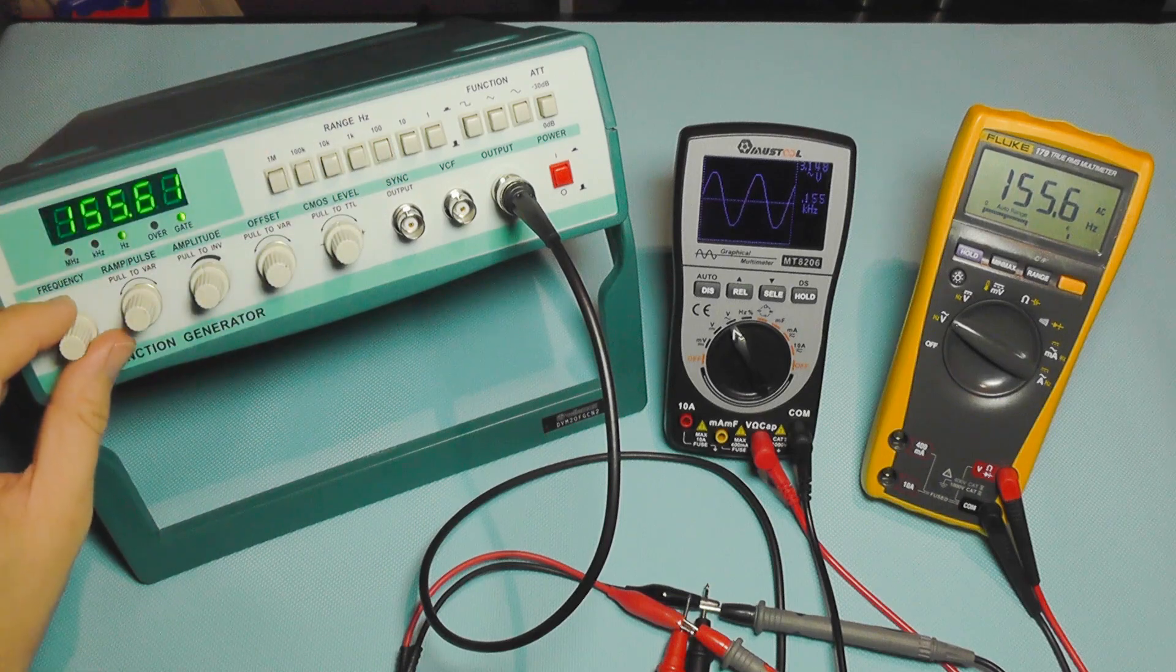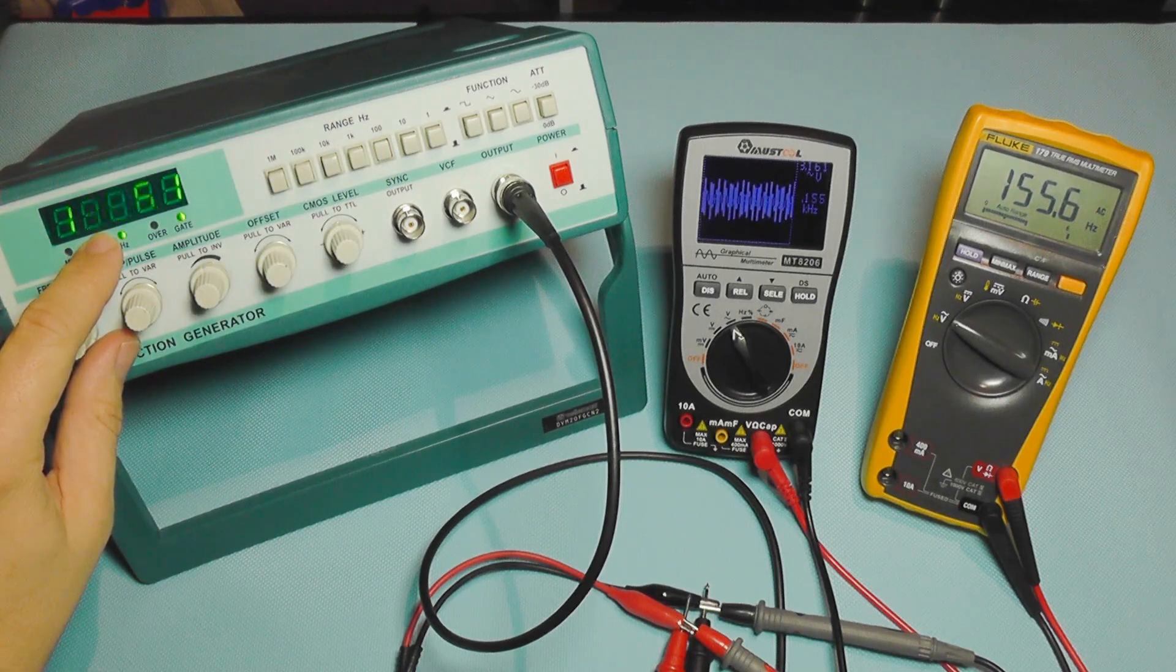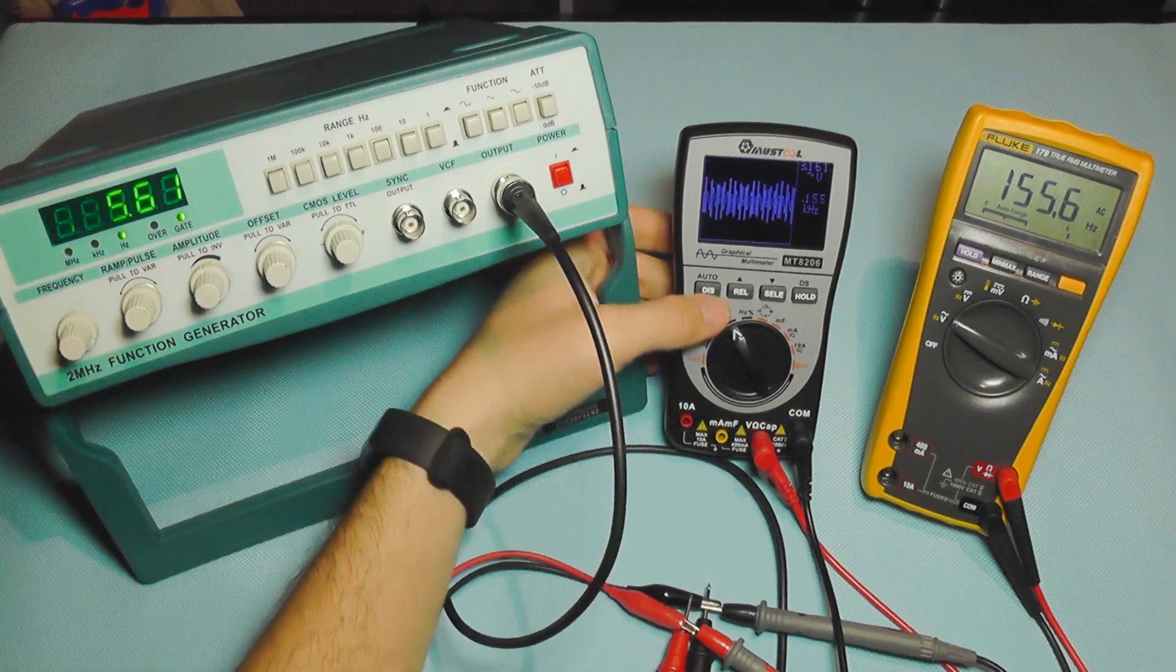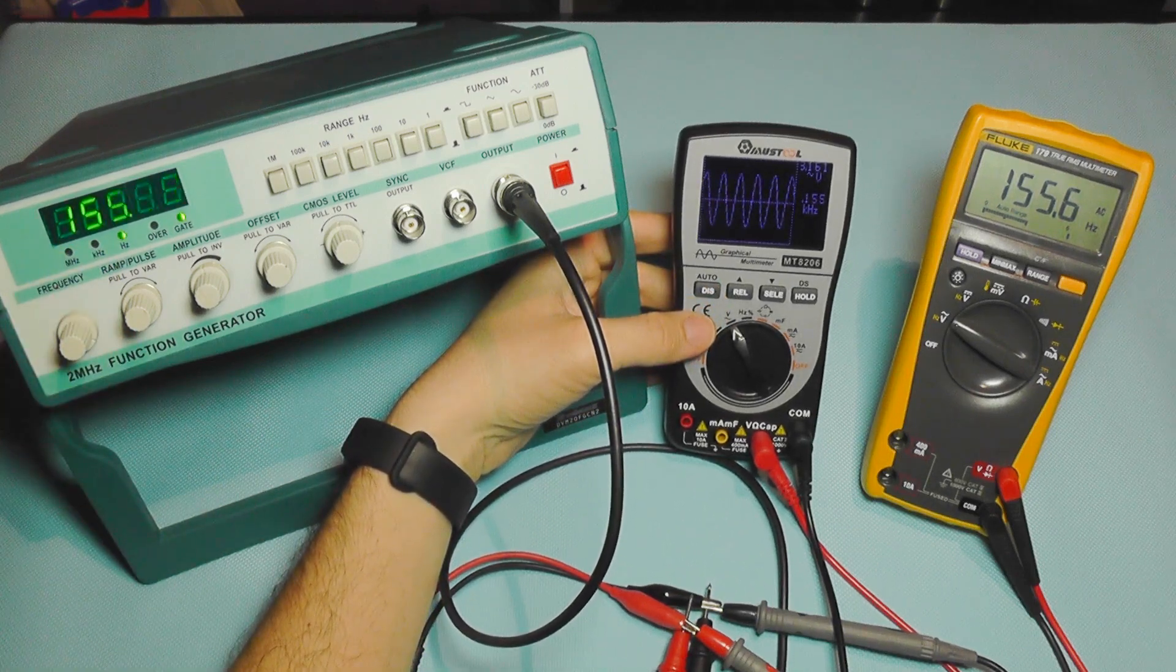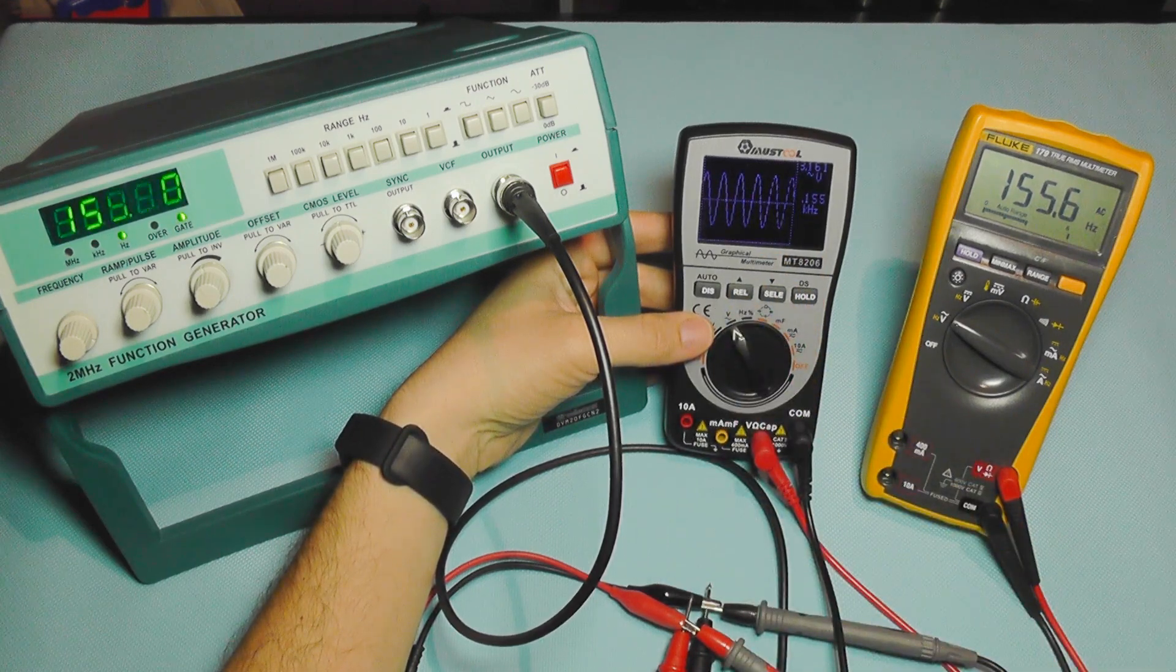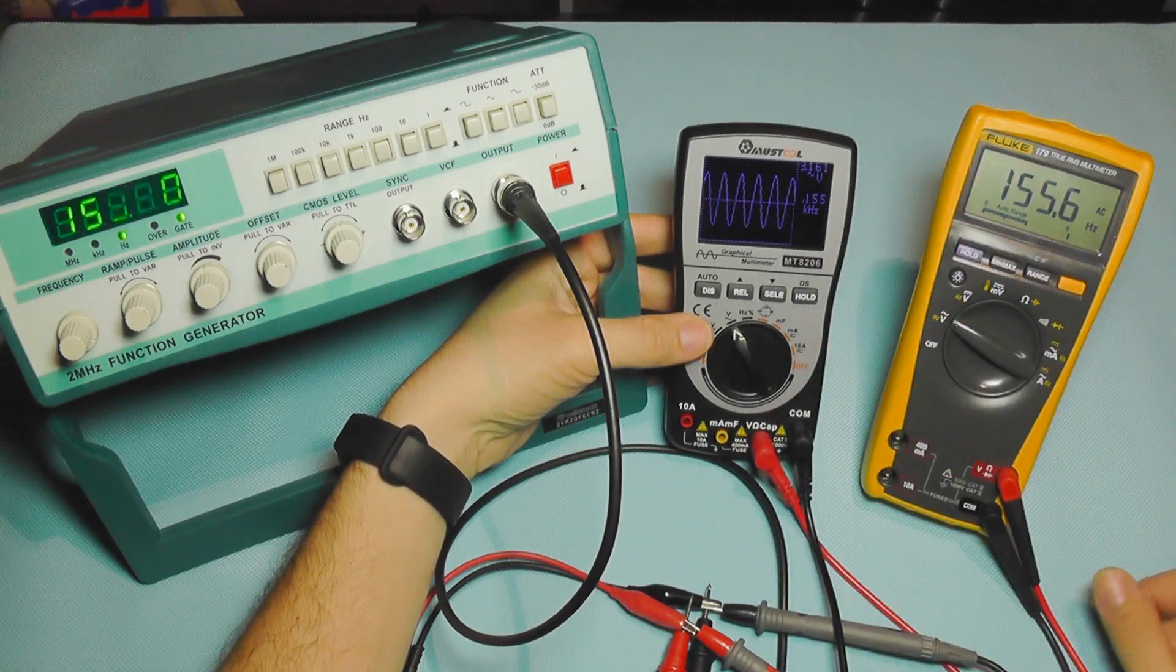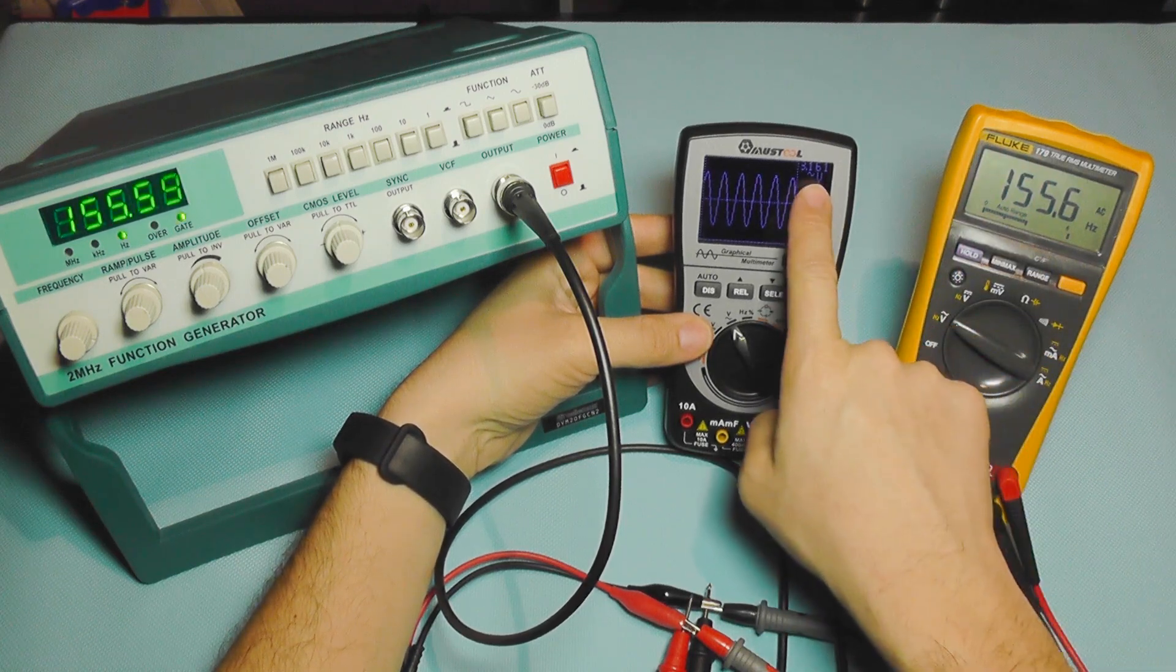Now I'm going to go to 100 Hertz and it's actually 155. I'm going to press auto range again and we have the graphical display here working right, showing the correct frequency and also the voltage.